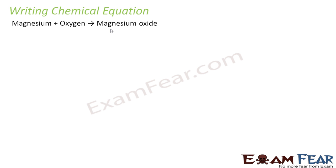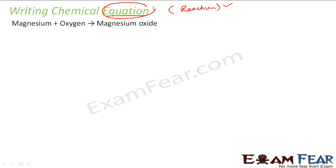So, why do we need chemical equations? Till now we have learned what chemical reactions are. We know what a chemical reaction is — we have chemical change, we have reactants and products. Now we are learning chemical equations. Why do we need them? The first thing is, instead of using full names like magnesium or oxygen, we can use the short form.